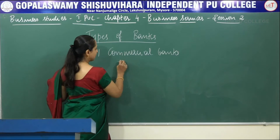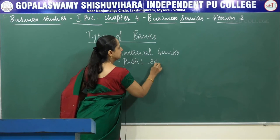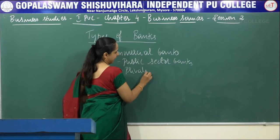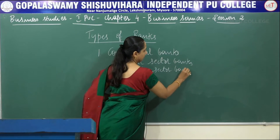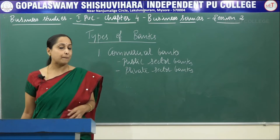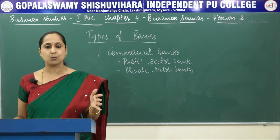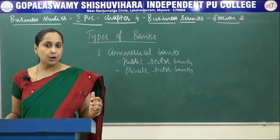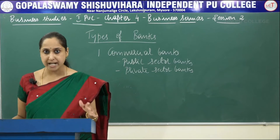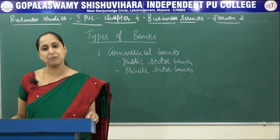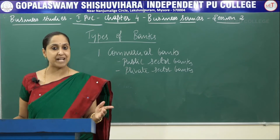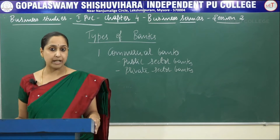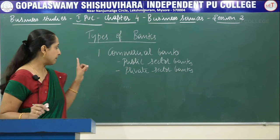Commercial banks are of two types: public sector banks and private sector banks. Public sector banks are those banks where the government has a major stake. Their main objective is to provide service to society, and their intention is not to make profit — they give more importance to social objectives. For example, SBI (State Bank of India), Punjab National Bank (PNB), and IOB (Indian Overseas Bank).